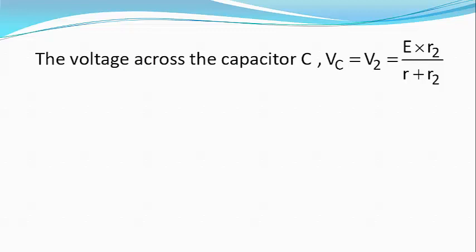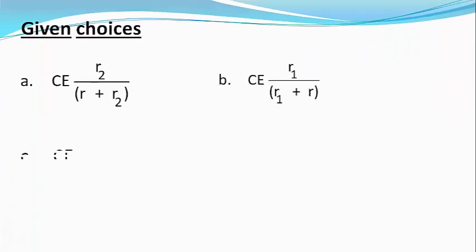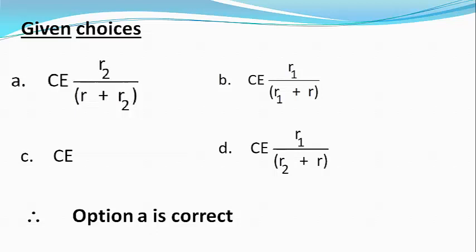And the charge across the capacitor C is given by Q equals C Vc, or equals C into E into R2 divided by R plus R2. Our answer matches with choice A and hence that is our right answer.